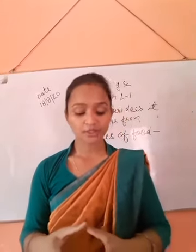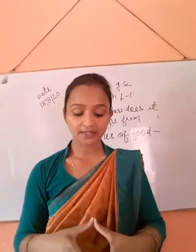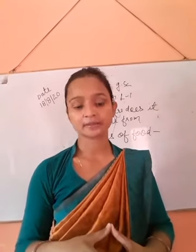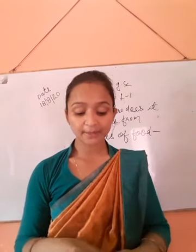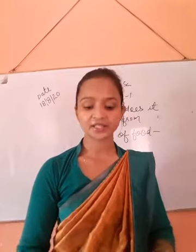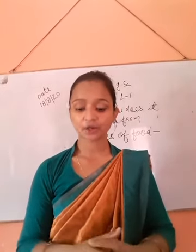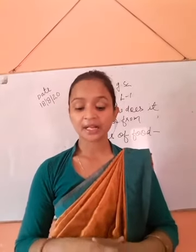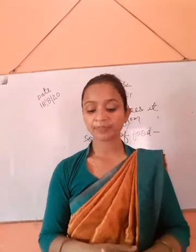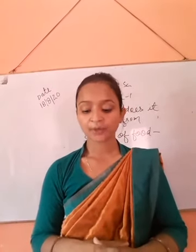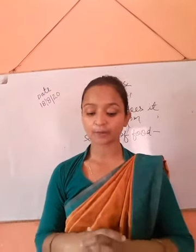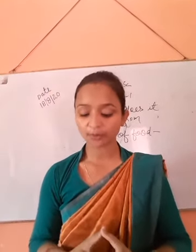Cereals are the most important sources of food for humans and animals, and they are rich sources of carbohydrates. The three most important cereals are wheat, rice and maize. These cereals are obtained from grains which biologically are fruits of a plant. Pulses or legumes, commonly called dals, are rich in proteins and are obtained from the seeds of leguminous plants.